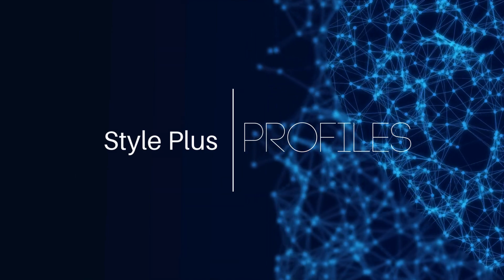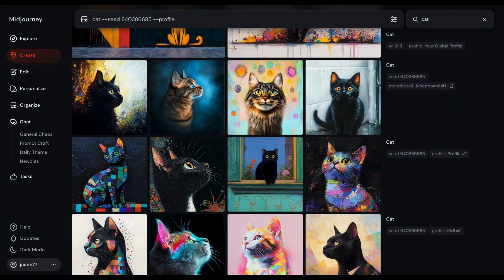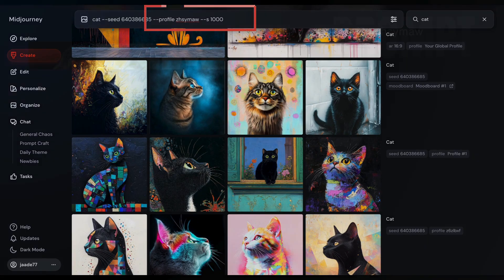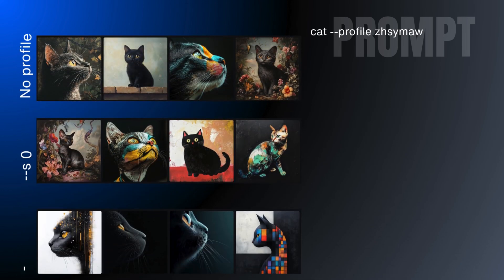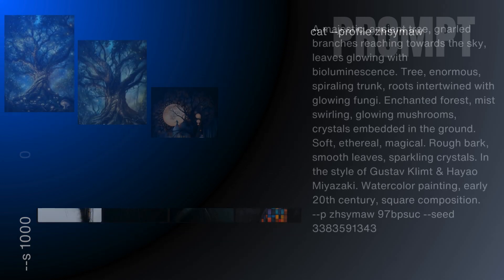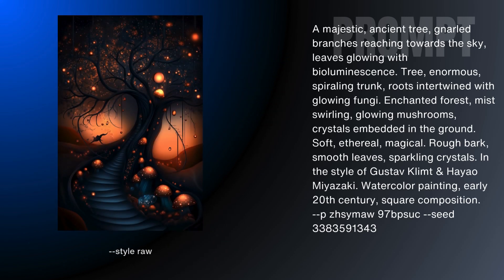Profiles interact with the stylize parameter. If you haven't used stylize before, it's a measure of Midjourney's aesthetic. The dash dash stylize, or dash dash s for short, lets you fine-tune the artistic flair of your creations. The profile parameter is designed to work with stylize — zero reduces the profile effects, and 1000 really pumps them up. Using the same prompt and seed but changing the stylize parameter, stylize zero is similar to turning off personalization, but note that style raw will also affect the look.